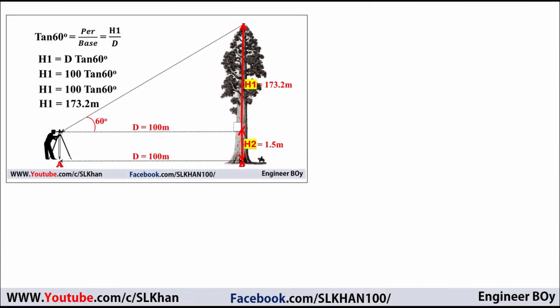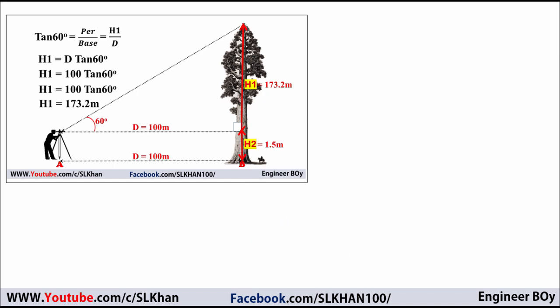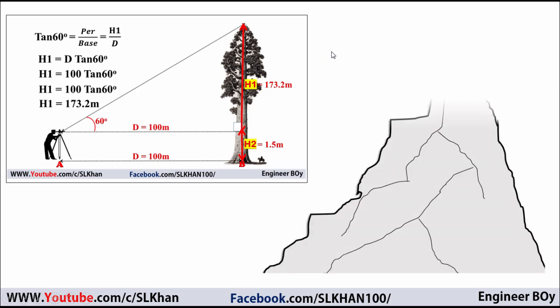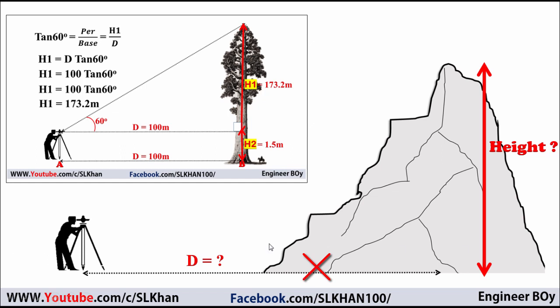Hey guys, I'm Isil Khan. If you remember, previously on Engineer Boy we learned and discussed about vertical distance and height determination using an angular instrument. In that case we had a tree which was accessible — it was possible to measure the distance between the instrument and the object, like d equals 100 meters. But what if we get an object which is never accessible?